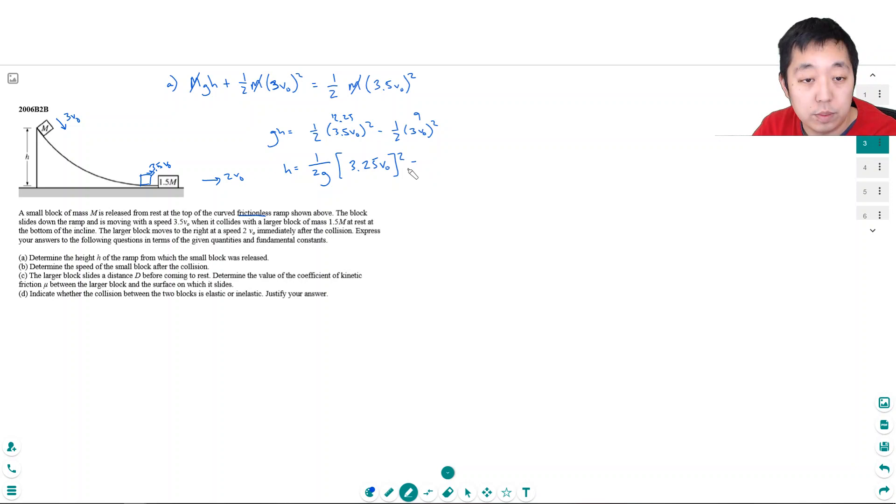12.25V0 squared minus 9V0 squared is 3.25V0 squared. Sorry, I already squared it, so it's just V0 squared. And then dividing, 3.25 divided by two is 1.625. So it's 1.625V0 squared over G. Just to simplify.